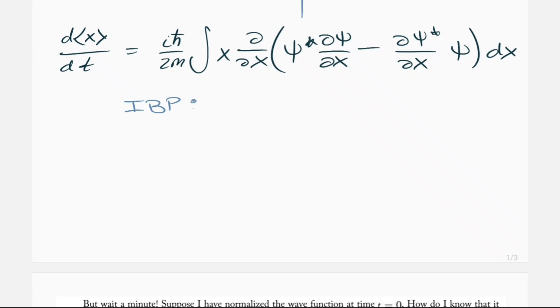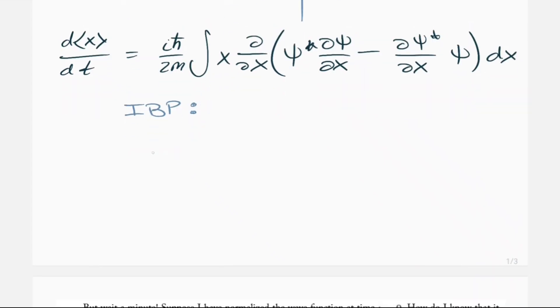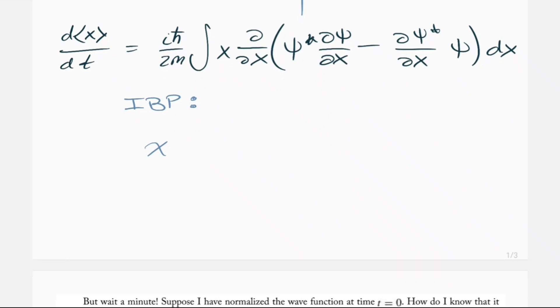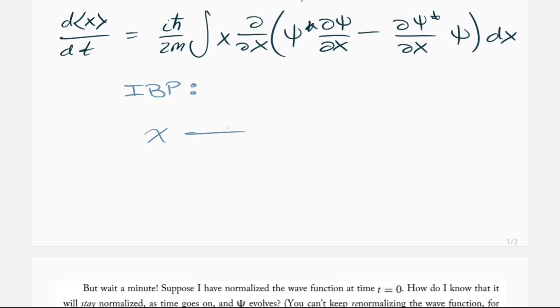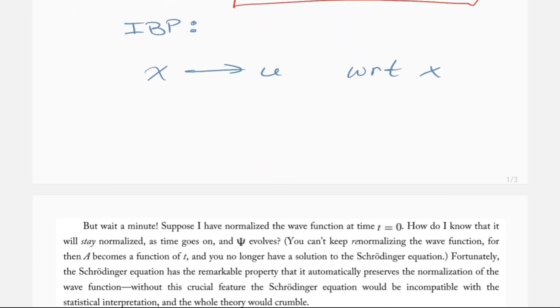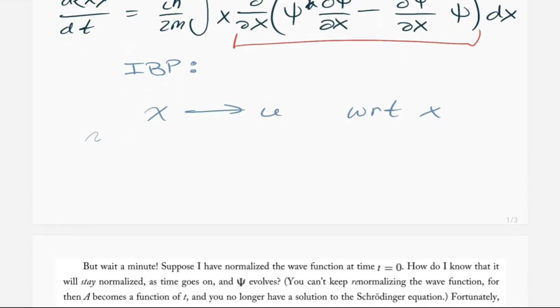now when we do that, what we really end up having, we have this x part right here, x dx. So that x we can say is kind of like our u variable, and that's with respect to x. And then we have this part right here, and that is our d/dx of psi star, d psi dx,